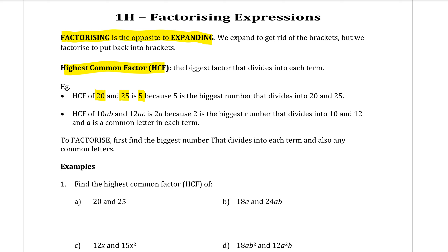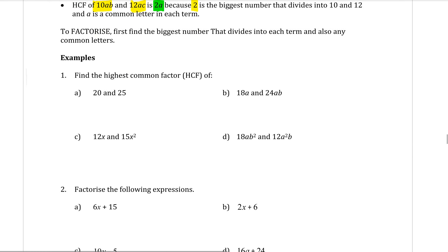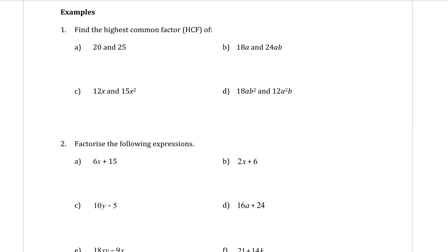But we are doing algebra here. So if I give you something like 10AB and 12AC, I need to find both the highest common factor of the number and the letter. Numbers first: 10 and 12 — the highest number they can both divide by is 2. They both also have an A, so A is also a common factor. That's why here it says 2A is the highest common factor. We're going to practice finding the highest common factor.